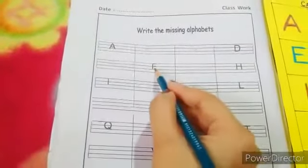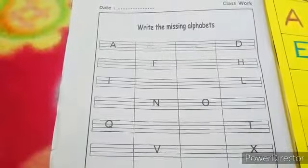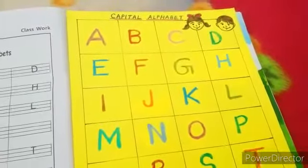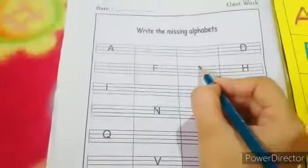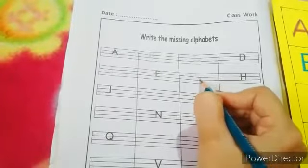So F is written over here. Let's find out what is the missing letter after F. Now tell me which letter comes after F? Yes, the missing letter is G.